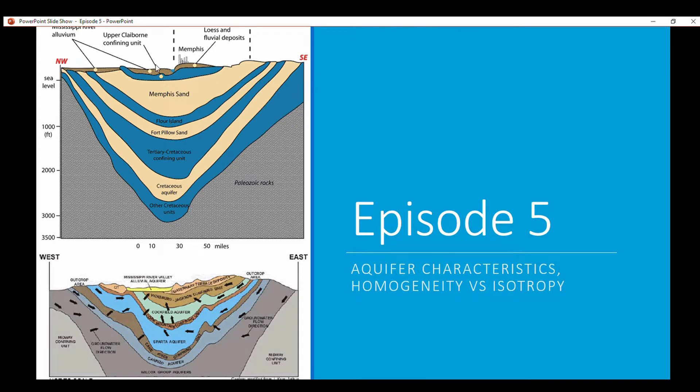This is a confining unit and then you have loess, which is basically wind-blown sands and fluvial deposits, and then you have the Mississippi River alluvium right here overlying a confining unit and you also have the Mississippi River alluvium over here.